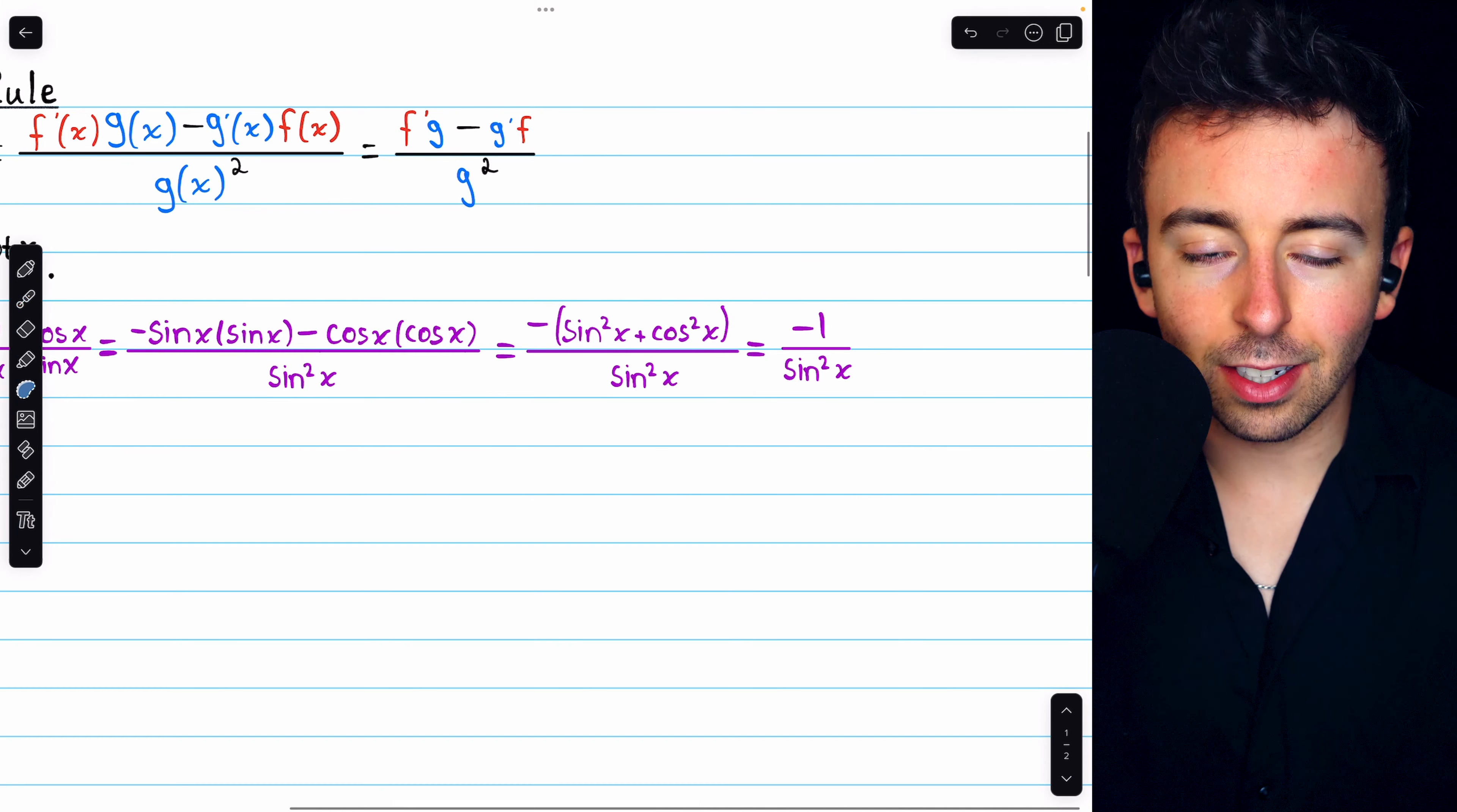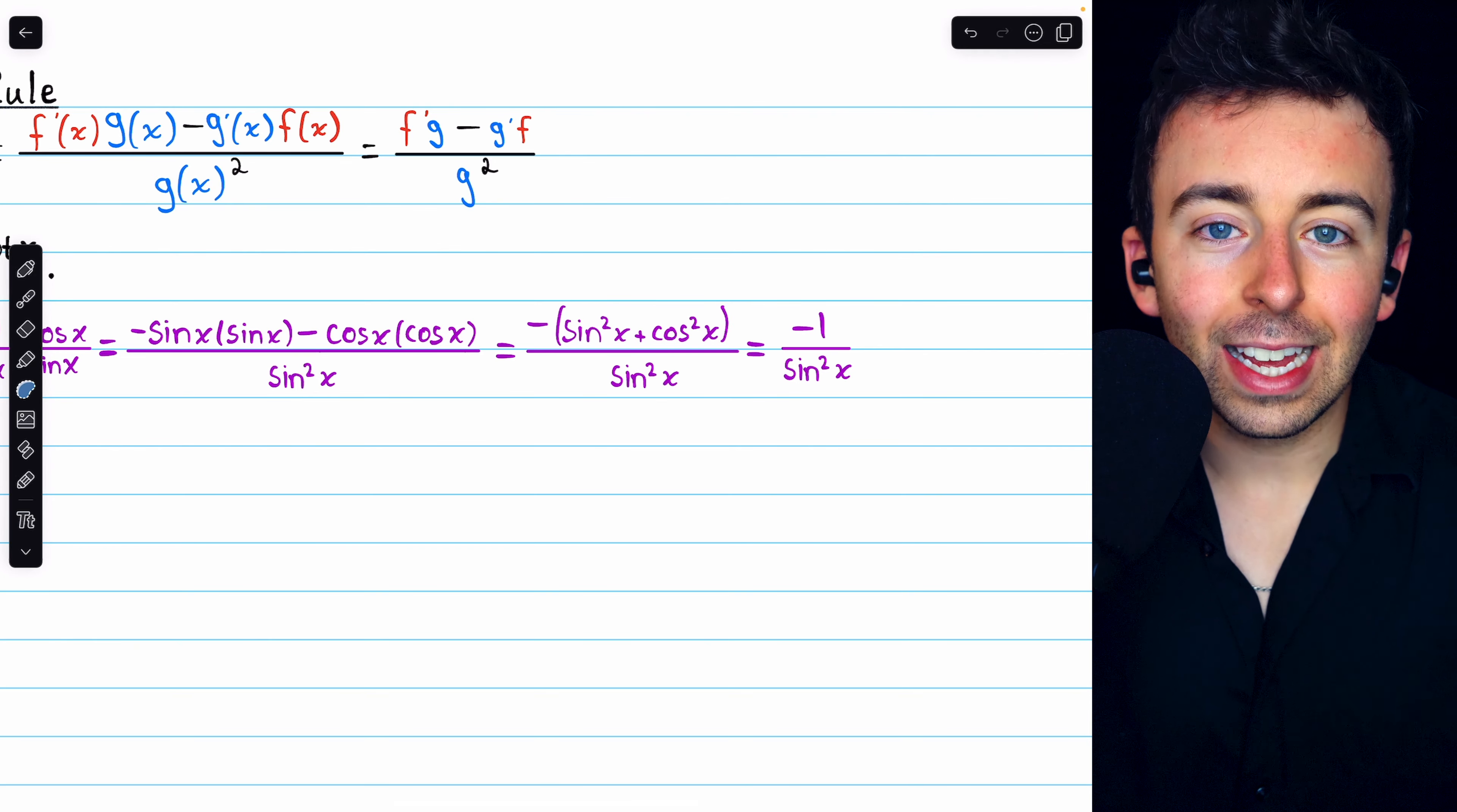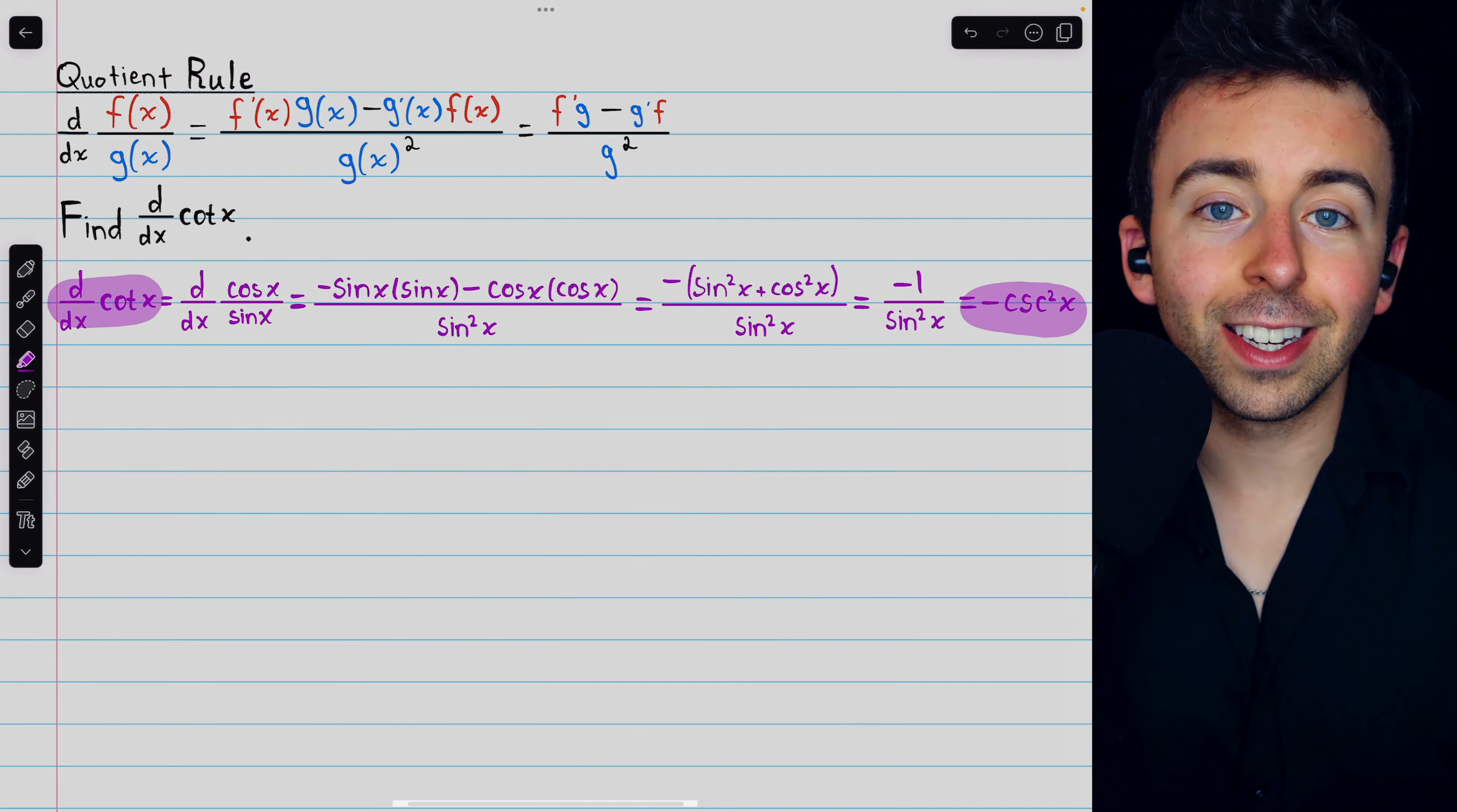One last trig identity you need to know is that 1 over sine x, by definition, is cosecant x. Hence, 1 over sine squared is cosecant squared. And negative 1 over sine squared is negative cosecant squared x. And that is the derivative of cotangent x.